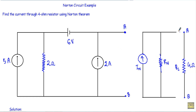This Norton equivalent circuit will be connected with respect to the A and B terminals. After deducing IN and RN, I can find out the current that is flowing through this 4 ohm resistor for the given network.